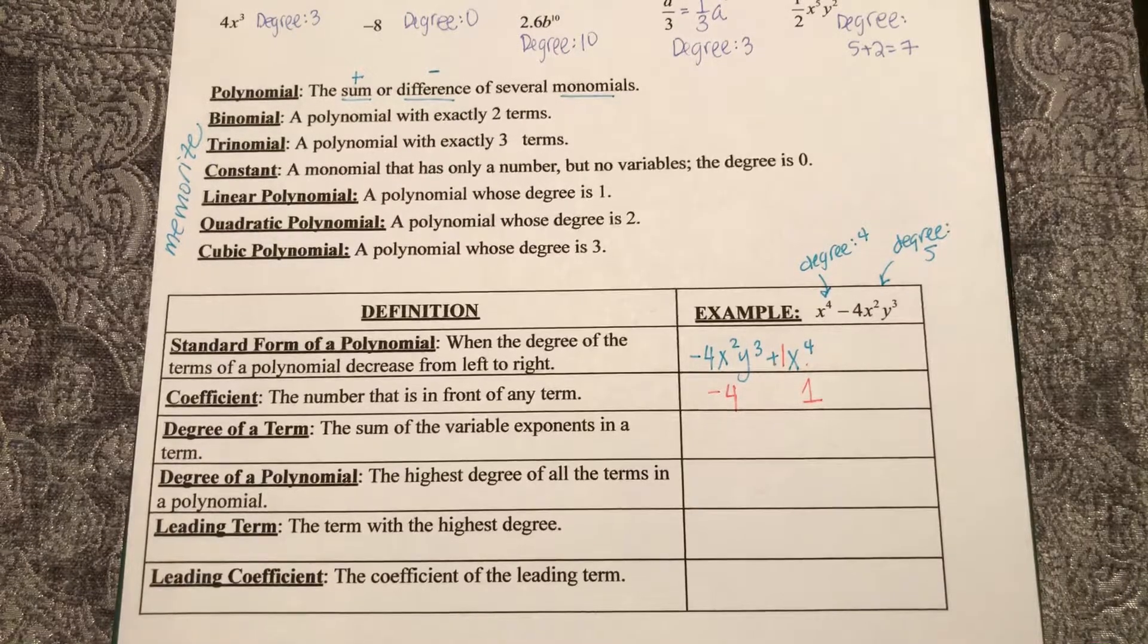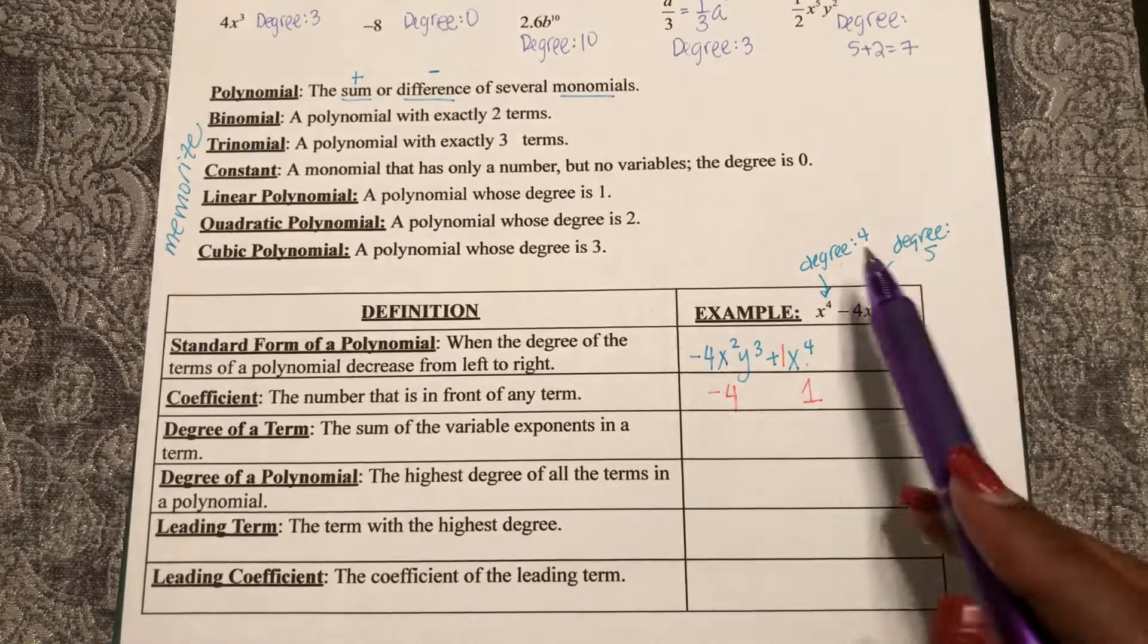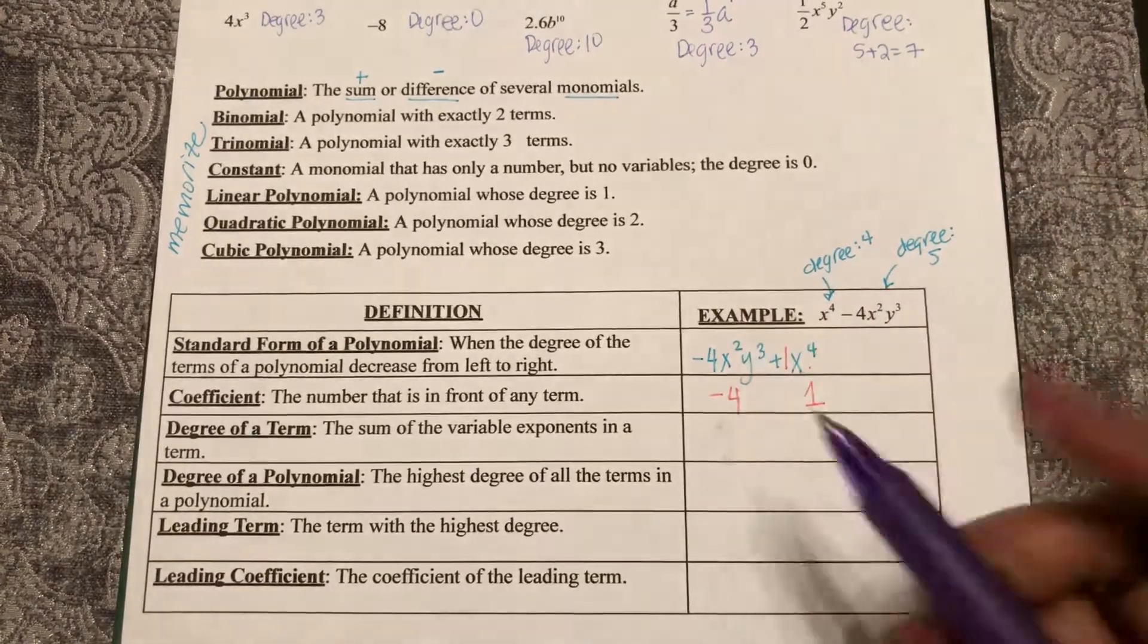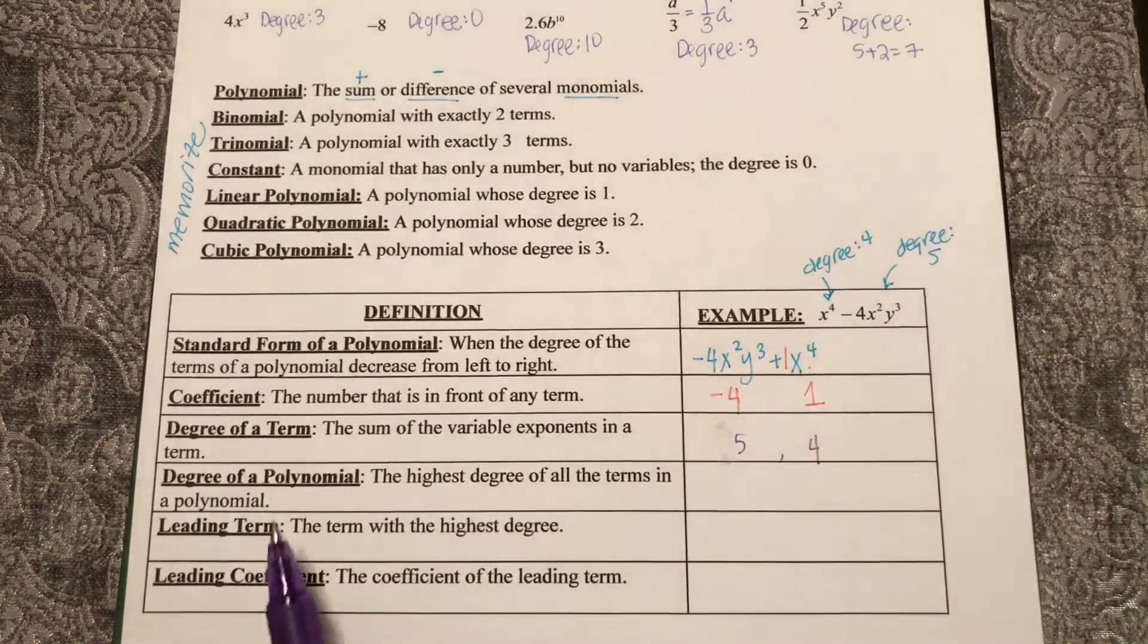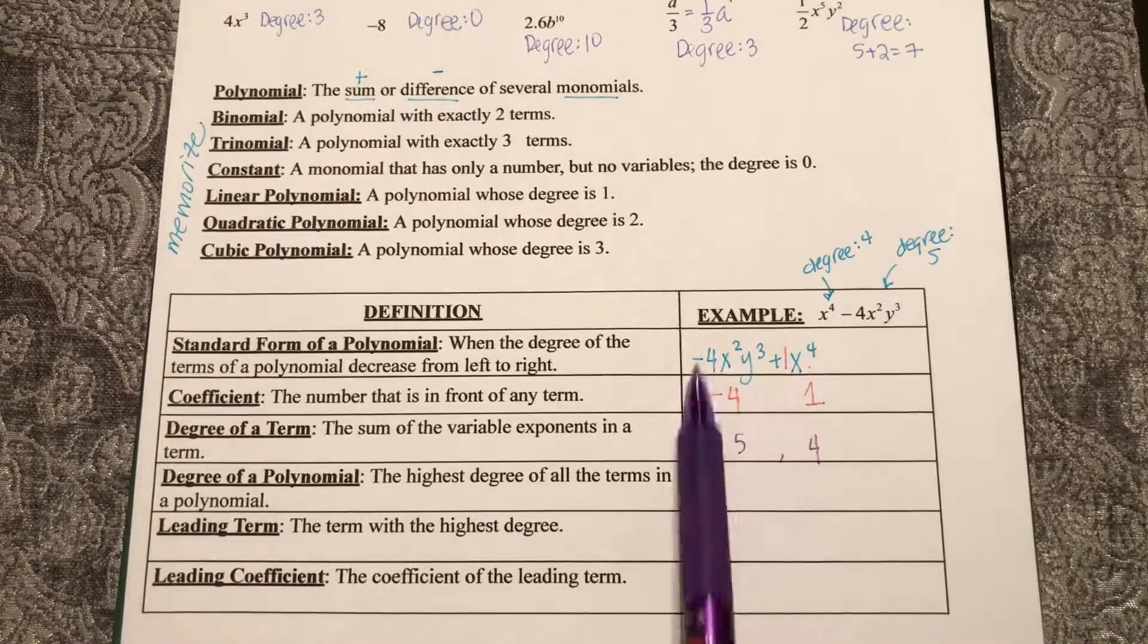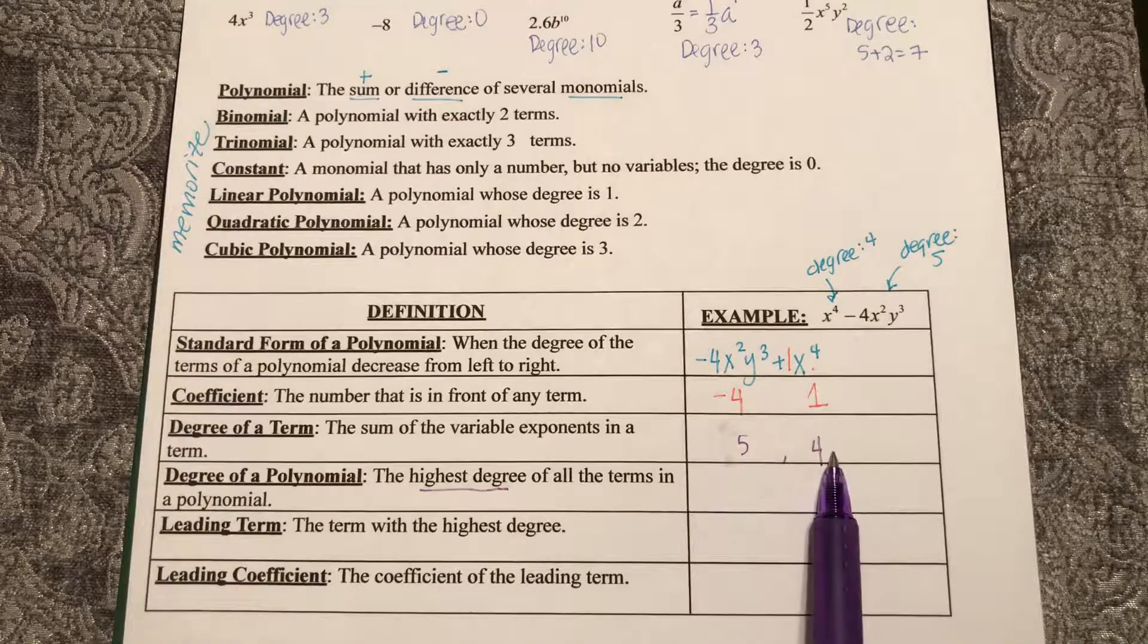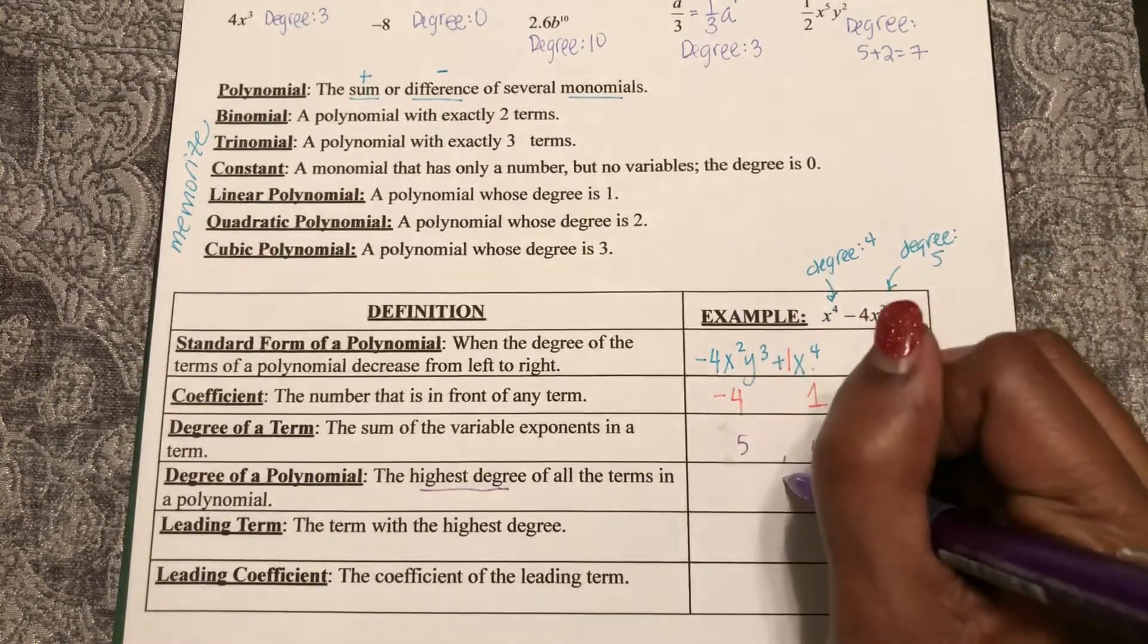The degree of the term is the sum of the variable exponents in the term. So we already talked about that. Those degrees are, in the order I have them written, five and then four. And then the degree of the overall polynomial is the highest degree in all the terms. So if this degree is five and this degree is four, the overall degree of the polynomial is five.